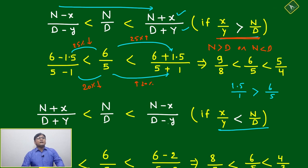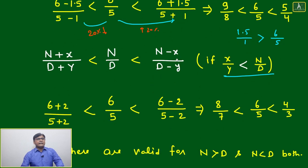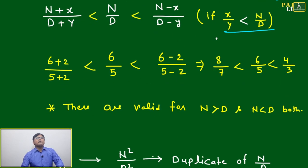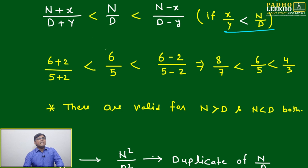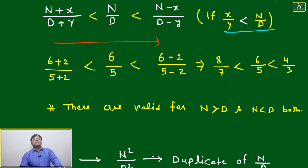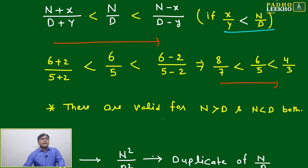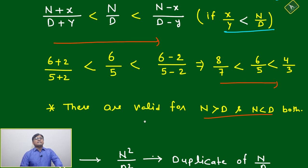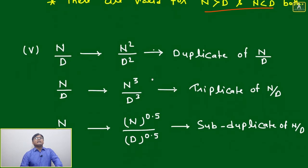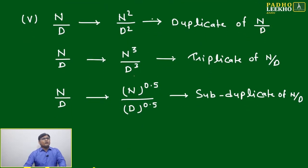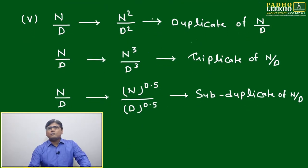Similarly, in the second case, if x/y is less than n/d, then this sequence will be followed. We can take examples and prove it — there is no issue. Both are valid for both cases: n greater than d, and n less than d.